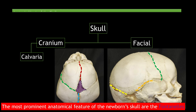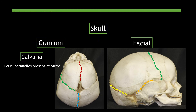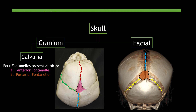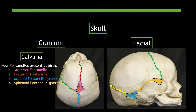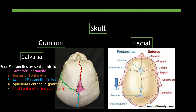The most prominent anatomical feature of the newborn skull are the fontanelles. There are four fontanelles present at birth, which include: the anterior fontanelle, the posterior fontanelle, the paired mastoid fontanelle, and the paired sphenoid fontanelle. Take note that there is also sometimes a fifth fontanelle called the third fontanelle, which is not common.